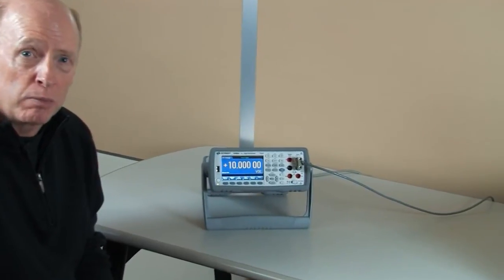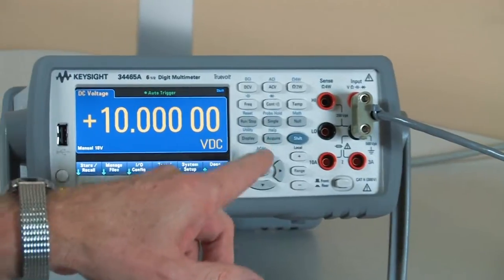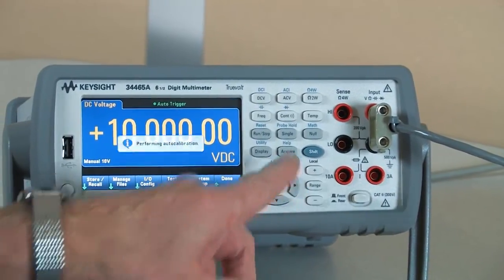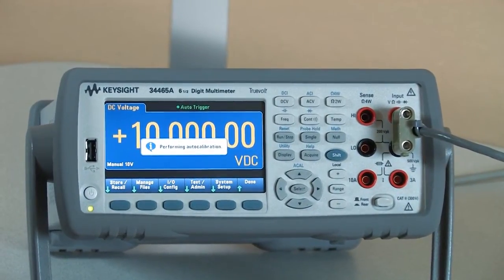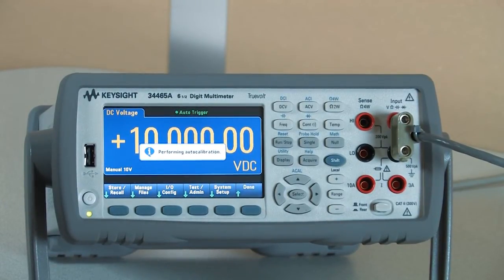To perform an auto calibration, you simply press the shift key followed by the up arrow key which starts the auto calibration. The auto calibration takes approximately 15 seconds to complete and in most cases the input signal can remain applied.